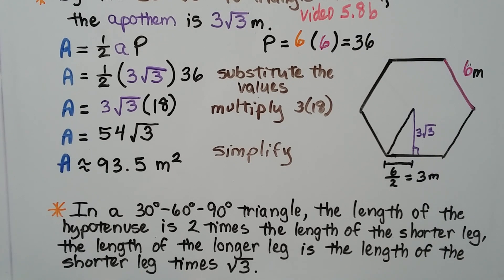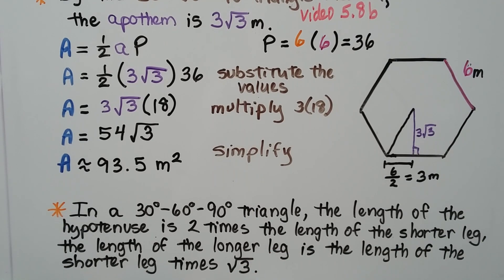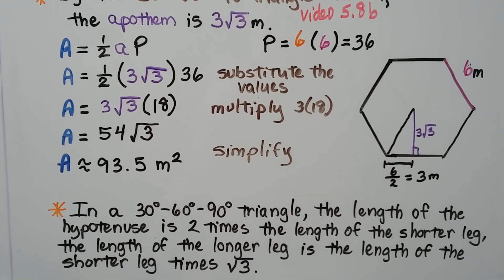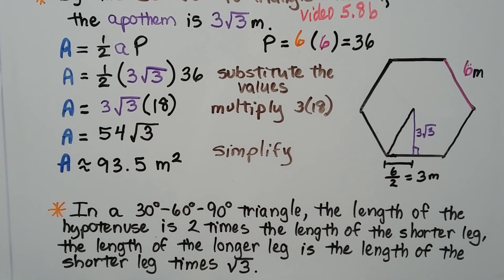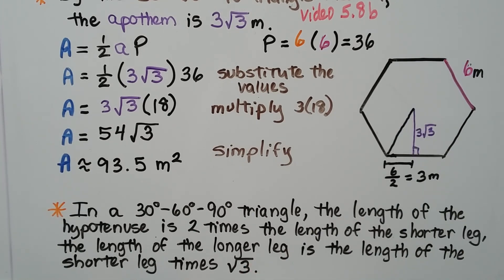For a reminder: in a 30-60-90 triangle, the length of the hypotenuse is two times the length of the shorter leg. Here our shorter leg is three meters. The length of the longer leg — our apothem — is the length of the shorter leg times the square root of three. Since this is three, our apothem is three square root of three.